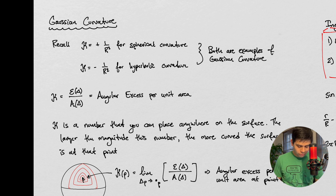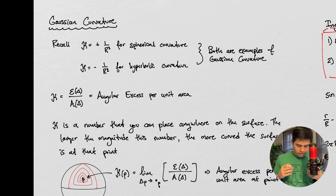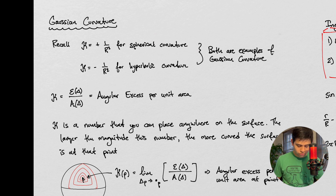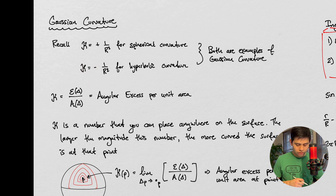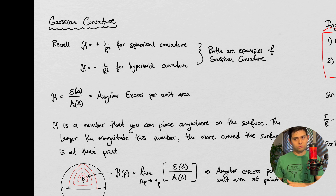We want to recall what we had gone over so far: the concept of this deficit. These constants here are sort of the proxies for that deficit angle. In the case of spherical curvature, it was related to a positive value of 1 over the radius squared of the sphere. And in the hyperbolic case, kappa was the negative of 1 over the radius of a hyperbolic object.